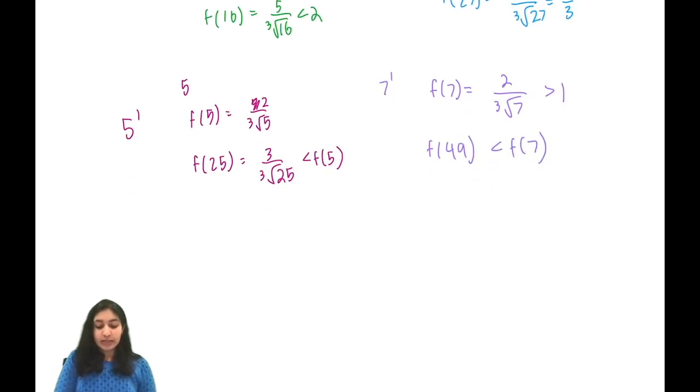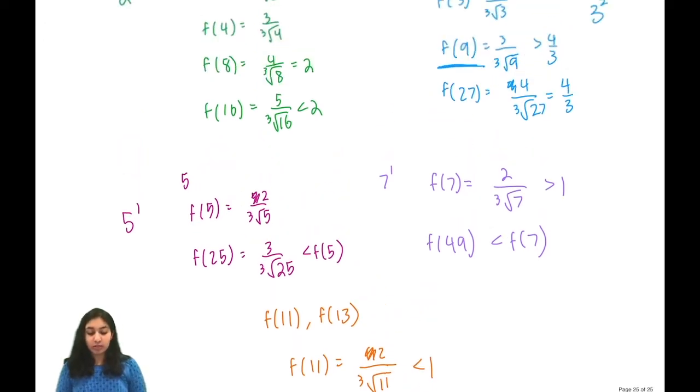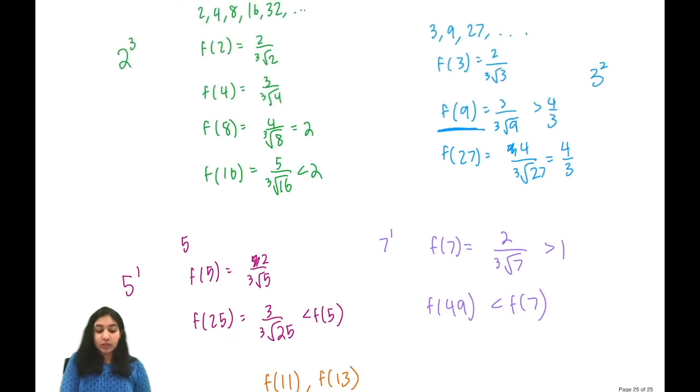At this point we can see that all other primes such as f(11), f(13), we don't want any other primes because f(11) is equal to 2 over the cube root of 11 and this is less than 1. That means that when we multiply it together, it's actually going to be reducing our product rather than increasing it. Same thing for f(13), 2 over the cube root of 13 is less than 1.